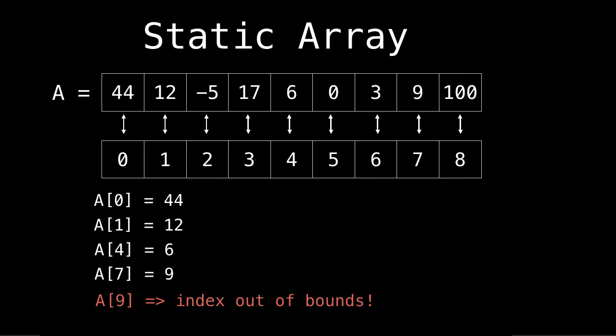The notation of the square brackets denotes indexing. So array A square bracket zero is equal to 44, meaning A at position zero is equal to the value 44. Similarly, A position one is 12, A four, six, A at seven is nine.